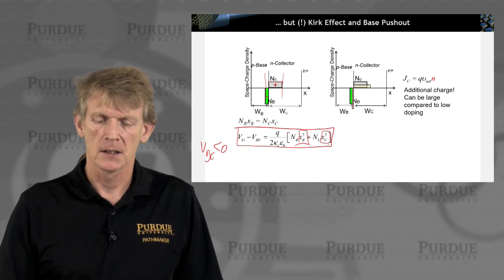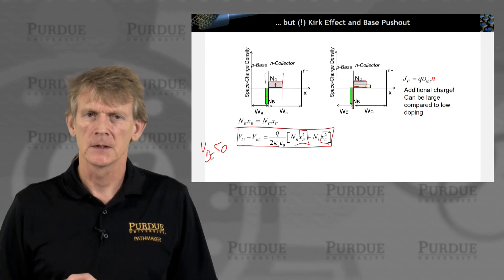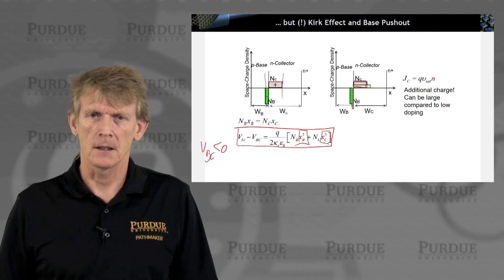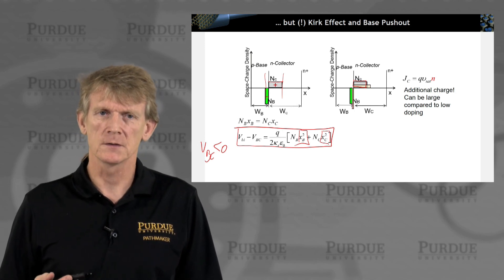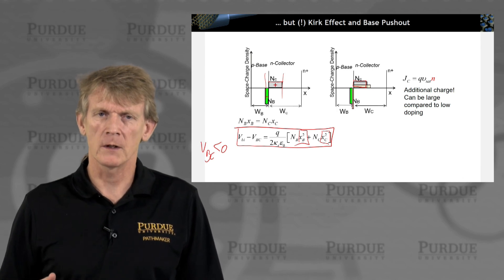It can be as large as the doping you might have in your collector. So those two quantities would become comparable now, because you said you're going to reduce the doping in the collector. Let's assume we reduced it quite a bit.